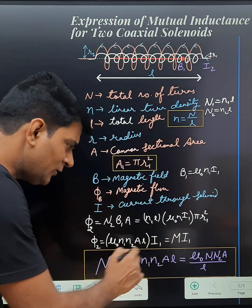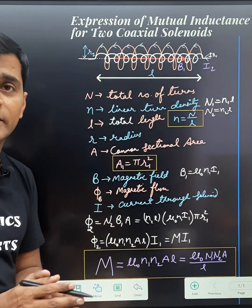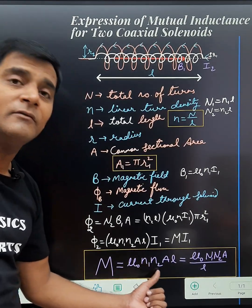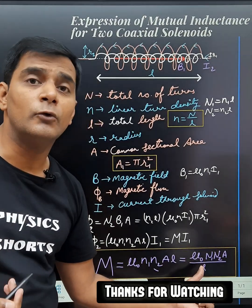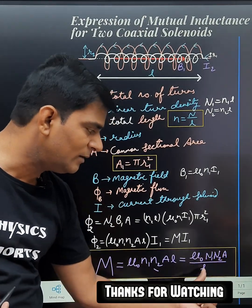So this coefficient of I1 will be the mutual inductance. We can write the expression of mutual inductance as μ0 N1 N2 AL, or we can write in terms of total number of turns, it is μ0 N1 N2 A by L.